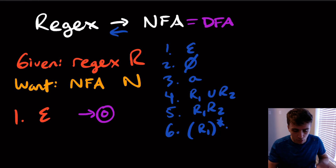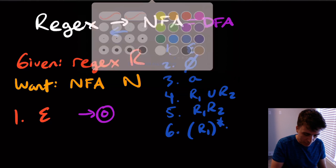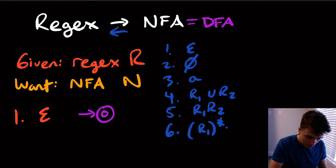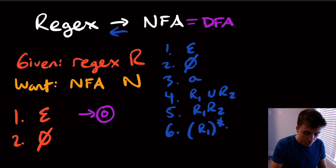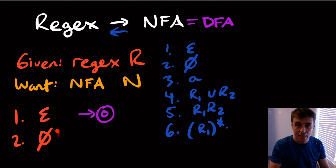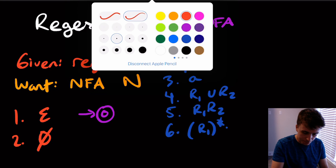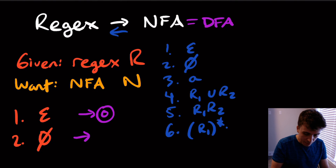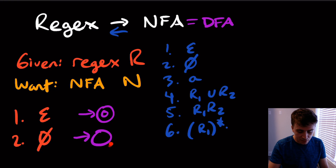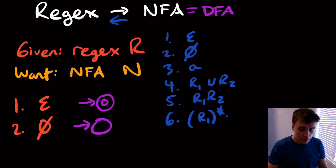What if it was one of the other five cases? What if it was the empty set? Can we make an NFA for just the empty set? It turns out yes. We can make a very similar NFA — again no transitions — but this state is not final. The previous one was final, but this one is not.